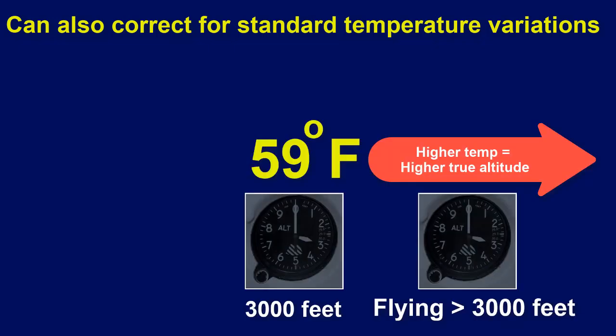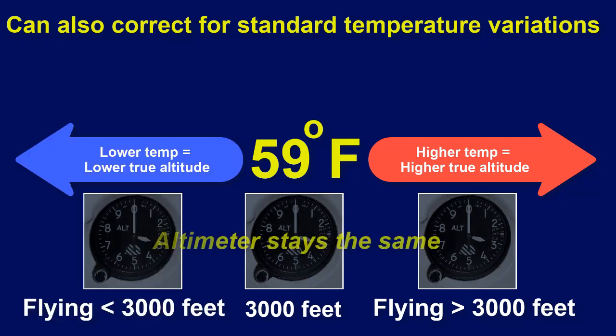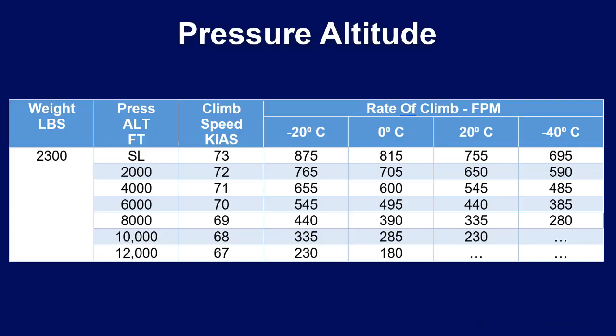The higher the temperature is over the standard 59°F sea level reading, the higher your actual altitude will be over the altimeter reading. The more the temperature is below 59°F, the lower your true altitude will be below the altimeter reading. Performance charts are created based on a standard day: 59°F at sea level with a 29.92 inches of mercury reading.